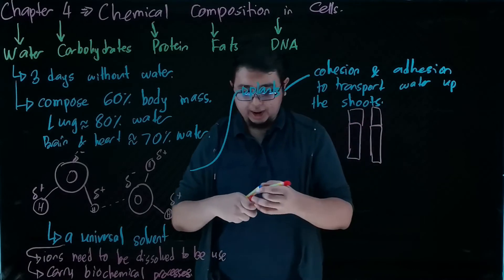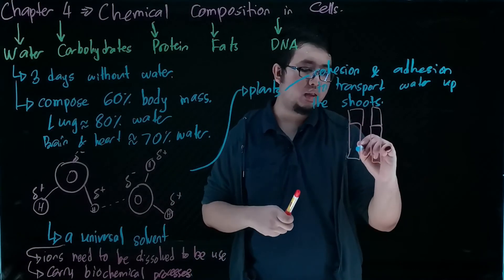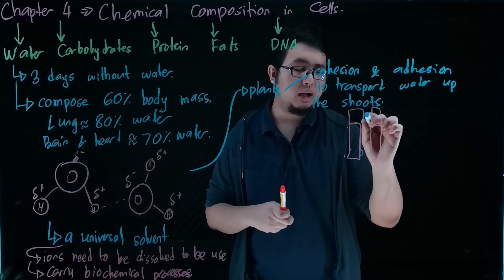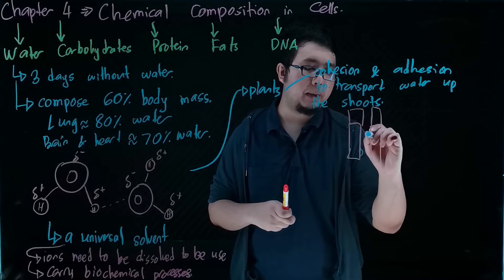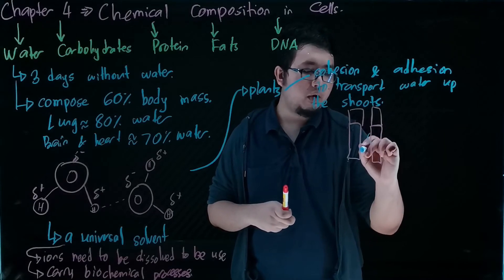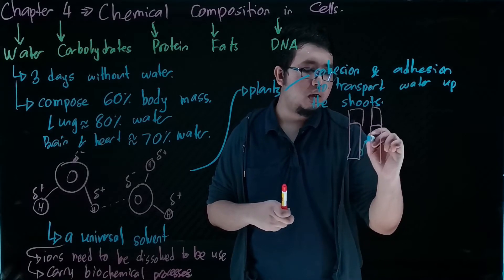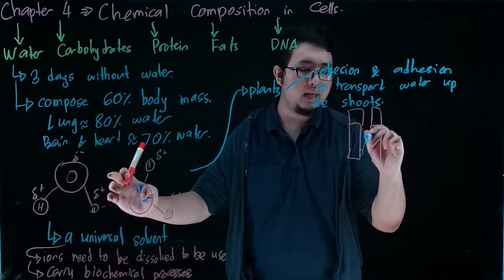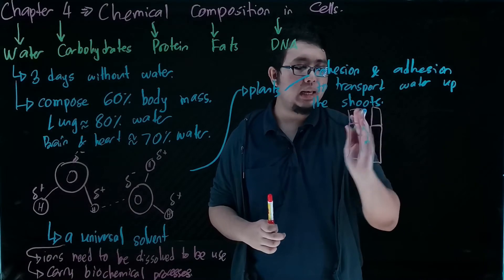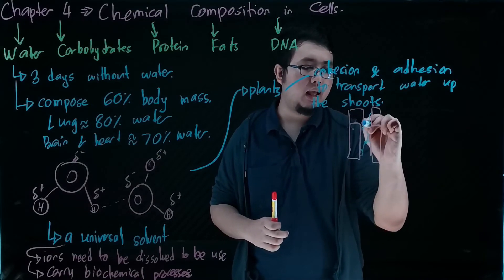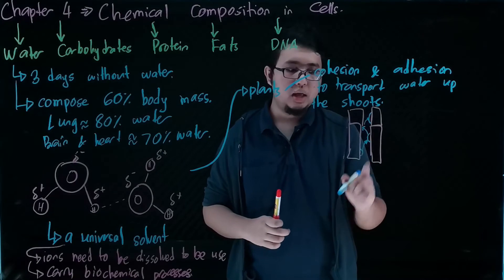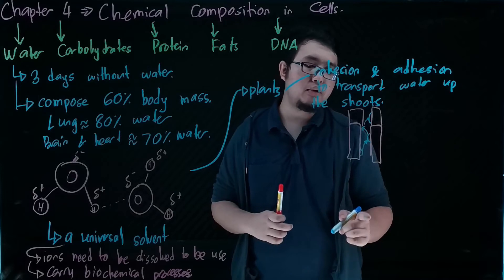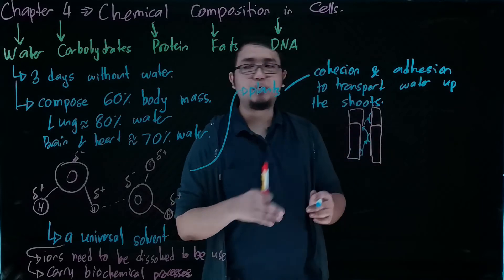For plants, the companion cells are within the vascular bundle where adhesion is the water molecule binding itself to the structure of our companion cell, and cohesion is when the water molecules are binding to themselves. Because of this polarity, they are able to jump between the companion cell and other water molecules.